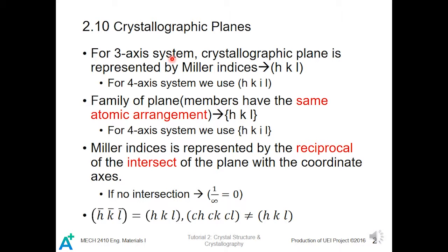Tutorial 2 Part 3: Crystallography. For a three-axis system, crystallographic planes are represented by Miller indexes. Here, for a four-axis system, we use this notation. A family of planes, defined by members having the same atomic arrangement, is represented by a different notation — notice the difference between these two types of brackets. For a four-axis system, we use this one.